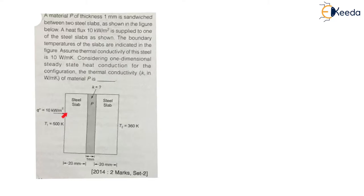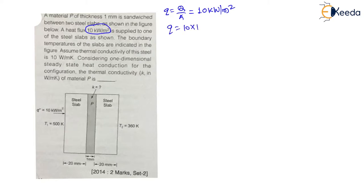You can see the heat flux is given to the left end of the slab. The heat flux q — which is heat transfer per unit area — is given as 10 kilowatt per meter square, which can be written as 10 × 10³ watt per meter square. This much heat flux is provided at the left end.